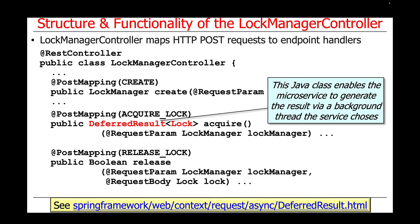We're using a new type here that we haven't talked about before called DeferredResult. This is a Java class that's part of Spring that enables the microservice — the LockManager application, and in particular the LockManager service — to generate and return a result using a background thread chosen by the service. We'll look at how that works in just a second.